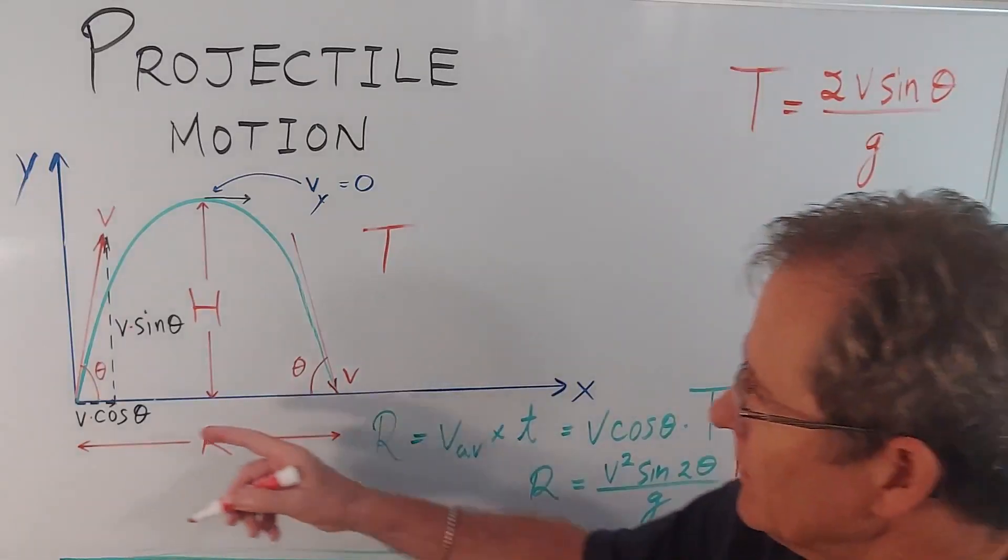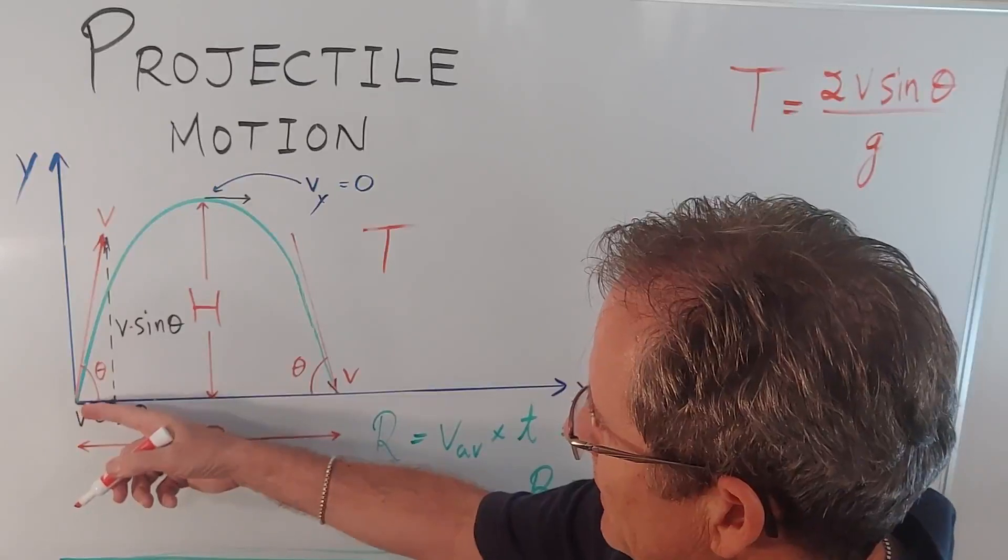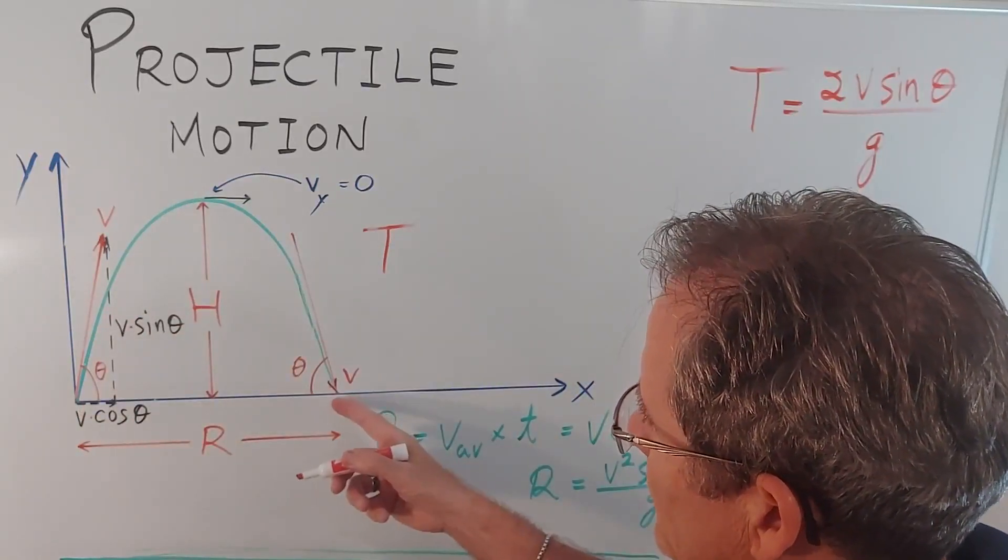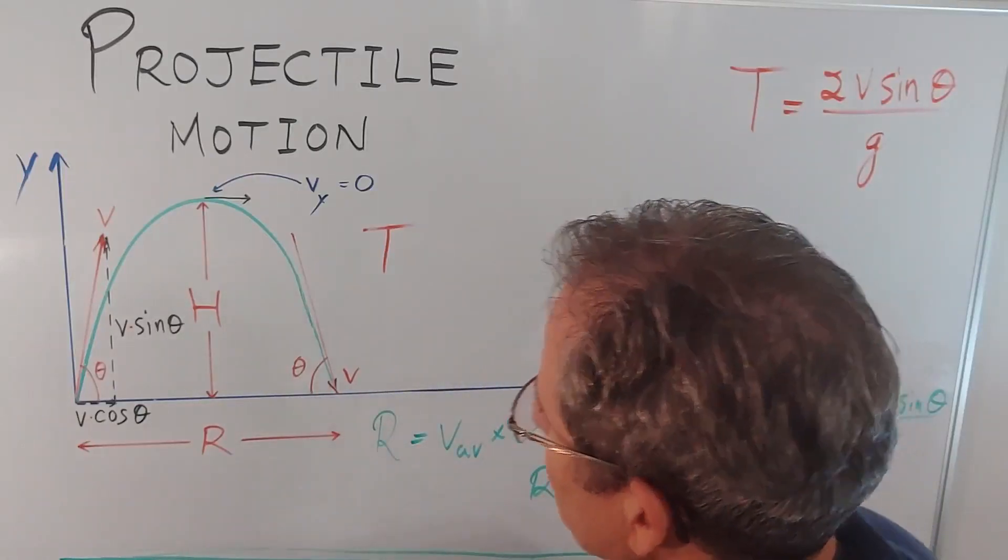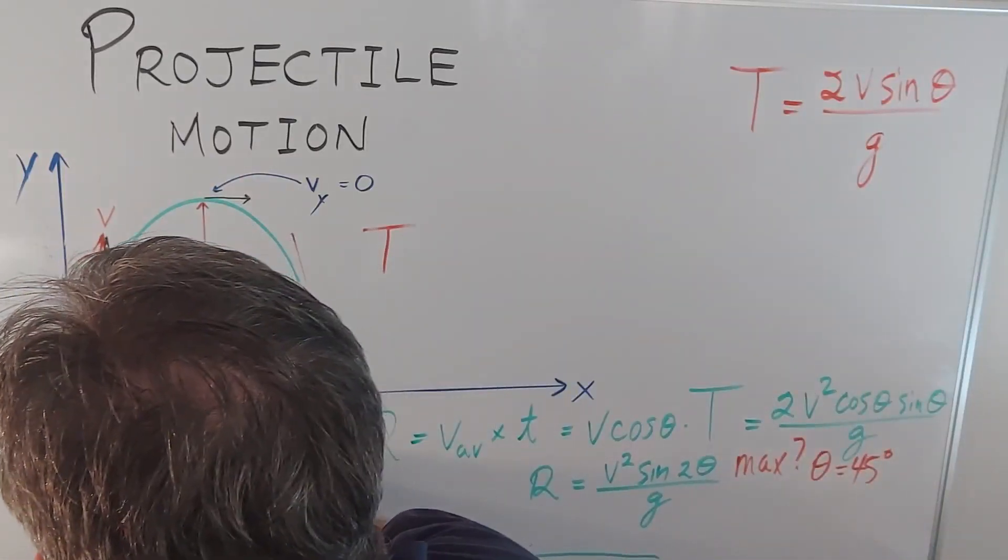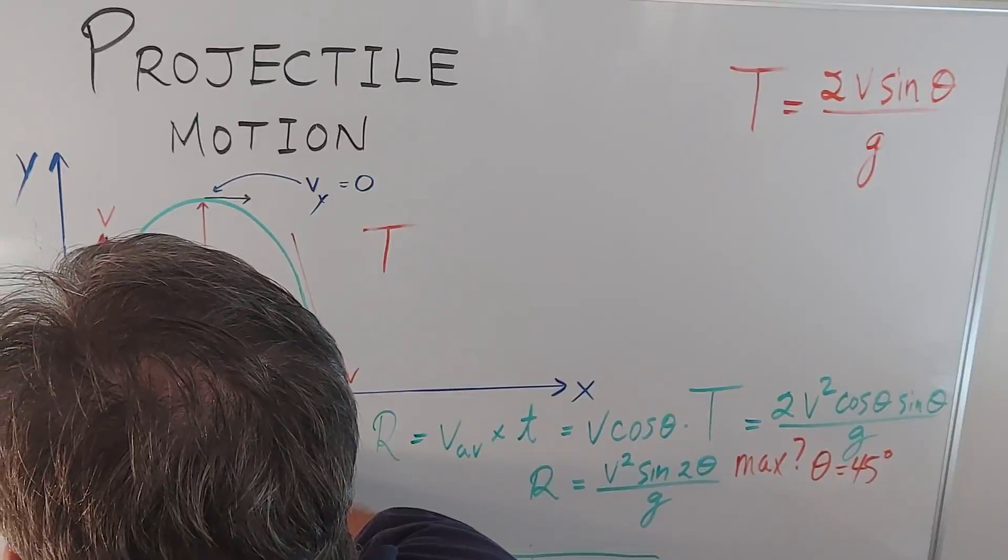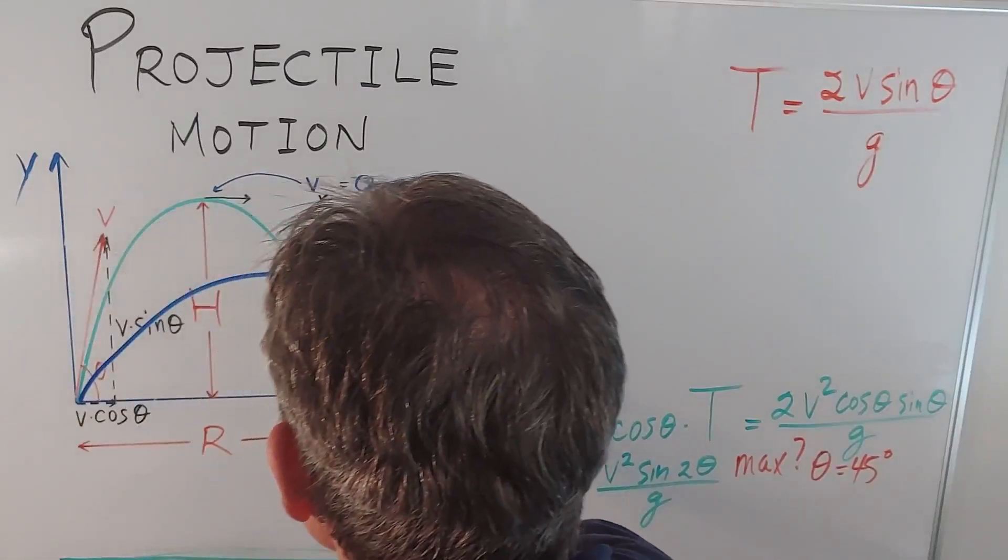So if you go back to our diagram this is approximately 60 and it travels a path like that. So at 45 degrees it will travel further. If I estimate 45 degrees to be like that it's going to be something like this.